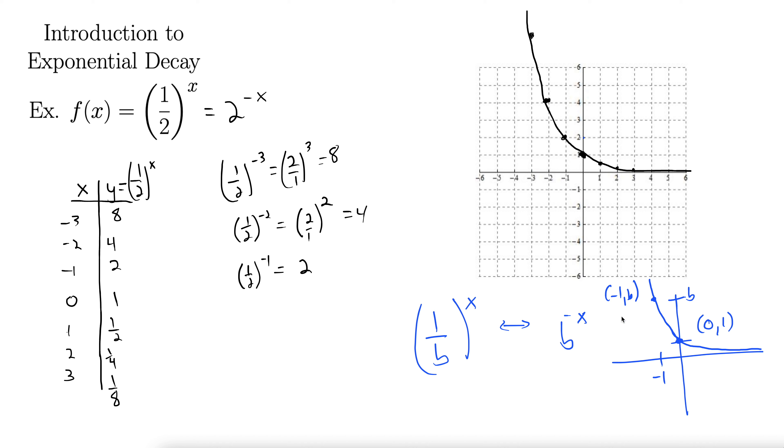And the bigger b is, the steeper this is going to come down. Just like the bigger b was in exponential growth, the steeper it went up. So that way you can graph any exponential decay function without plotting a bunch of points.